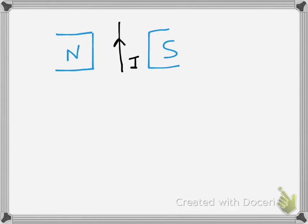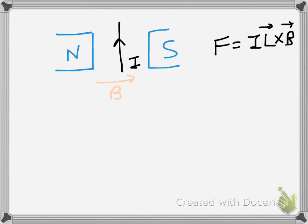In here we have a north pole, in here we have a south pole, and we also have a coil. This particular coil will experience a force given by F = IL × B, where L is a vector in the direction of current and B is the magnetic field. The magnetic field is from north to south. L will be in the upward direction, so IL × B is going to be inside the plane of the board, meaning a force is exerted pointing inward — this particular wire will tend to move.